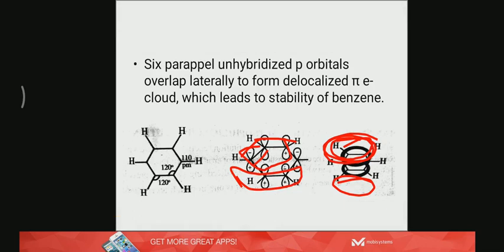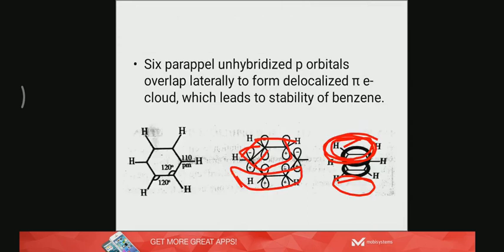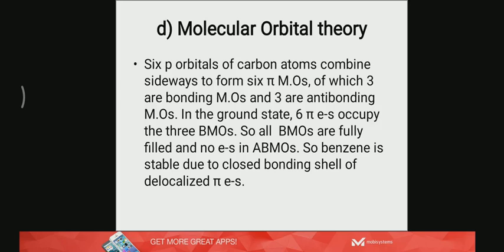So even though benzene has three pi bonds, pi electrons due to resonance are completely cyclically delocalized, making it very stable. So it resists addition reactions and instead undergoes substitution reactions. Finally, molecular orbital theory.